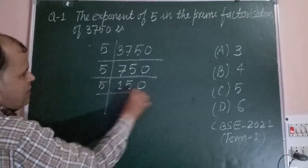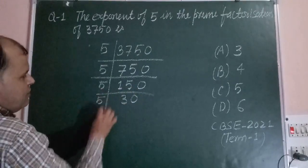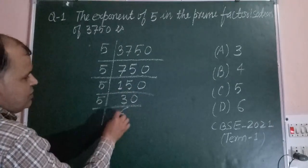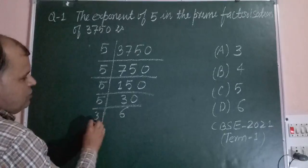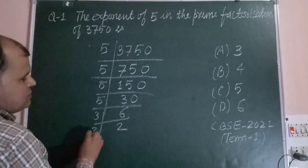Now again by 5, 5 into 15 is 3, this is 30. And by 5 again, 5 into 30 is 6. Now this is 3 times 2 equals 6.